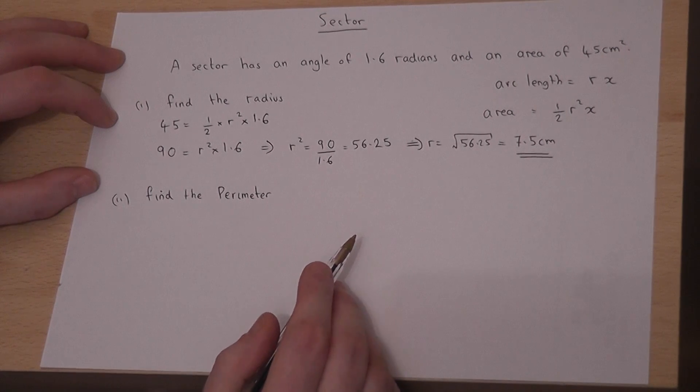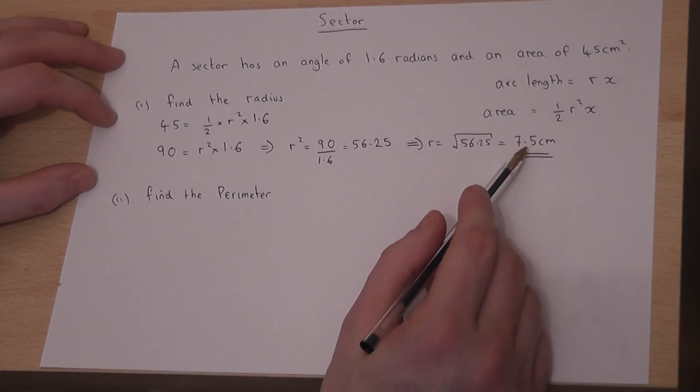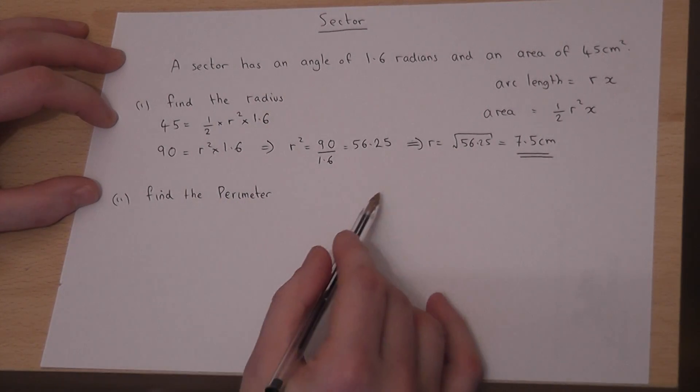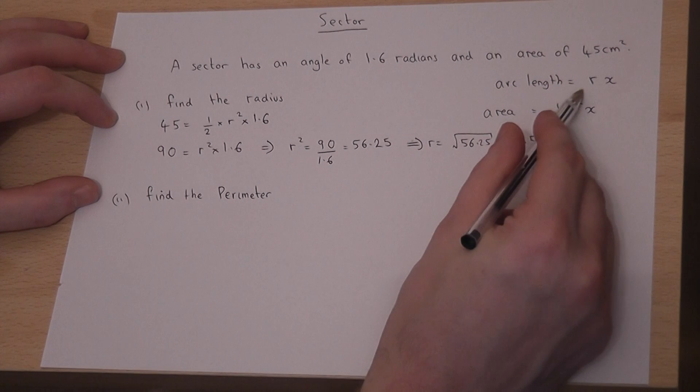I've rearranged the formula to find r. I can now find the perimeter of the sector by first finding the arc length, which is the curved part, using r times x.